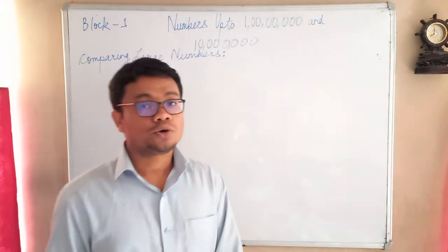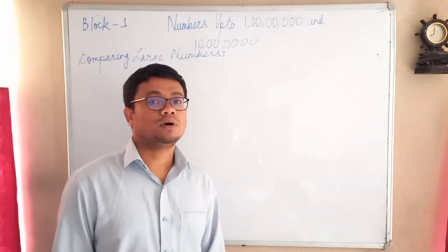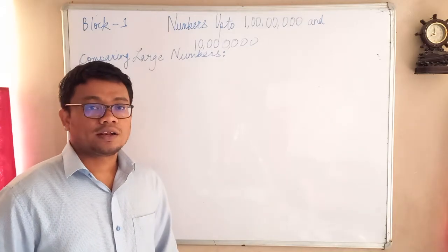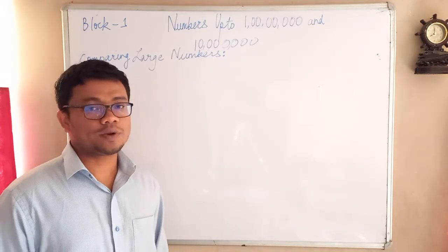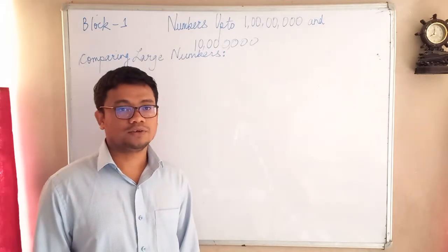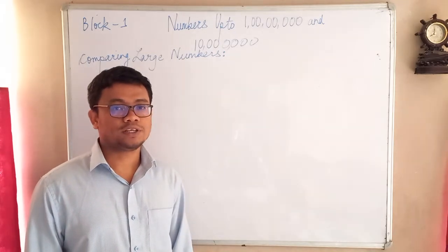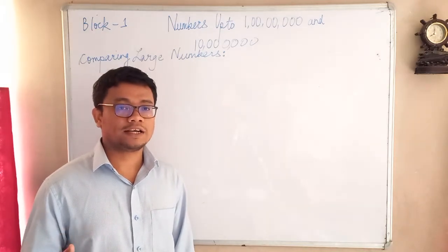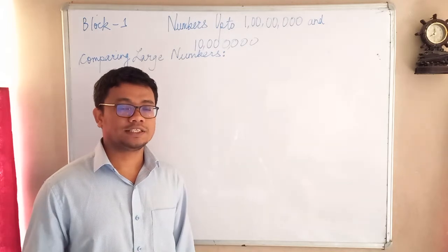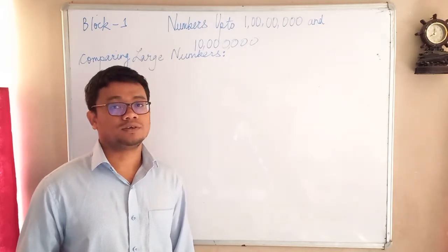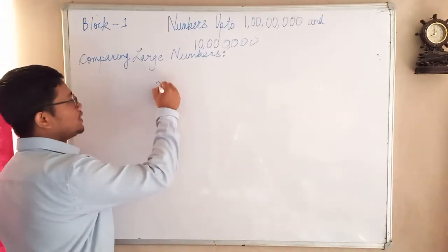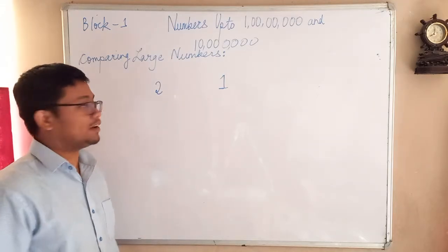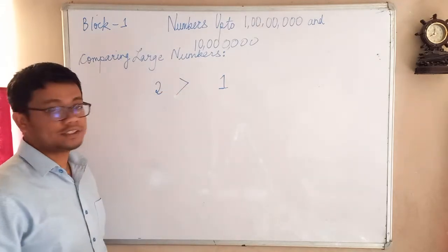Hello, good morning children. Today we are going to learn about a new topic which is comparing large numbers. There are so many numbers and they have different values. What you will be learning is how to understand which value of a number is greater than the value of another number. For example, as you already know, like 2 and 1 — amongst 2 and 1, which is the greater value? Obviously 2 is the greater value.